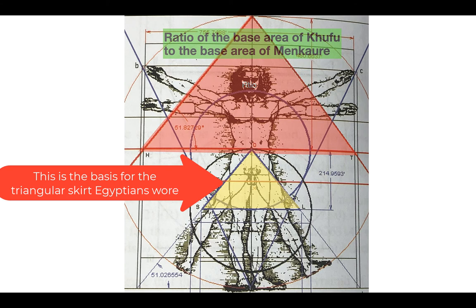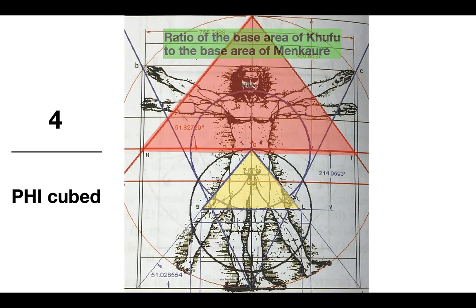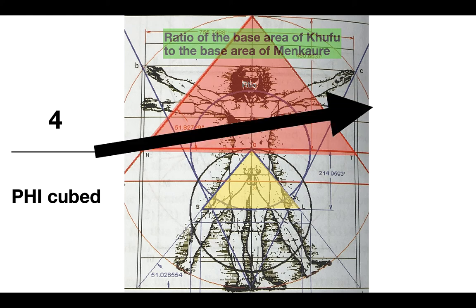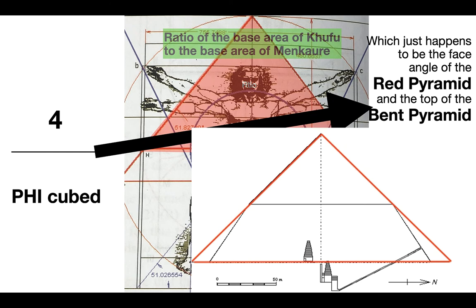So, if you take the ratio of the base area of Khufu in red, to the base area of Menkaure in yellow, and I'll just bypass the math, it's four over phi cubed. So, the Great Pyramid, four, the Menkaure, phi cubed, four over phi cubed. Interesting ratio.